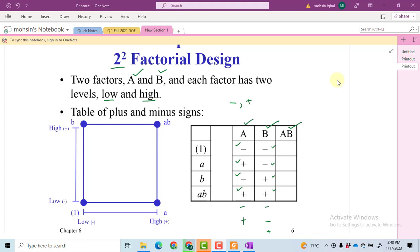How we will get the interaction term AB? Just multiply these two signs: minus multiply minus is plus, minus multiply plus is minus, and plus multiply by plus will become a plus. These signs that we have used, these signs will be used in order to calculate different things just like contrast, effect of A, sum square of A, B and AB. These signs are quite important for you people.